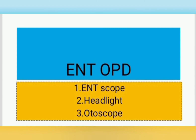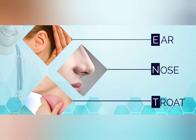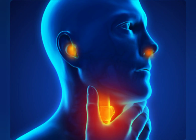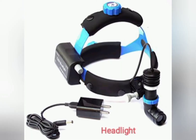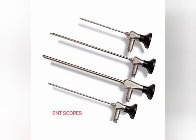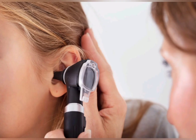Next is ENT OPD. ENT means ear, nose and throat. Patients who are suffering with problems related to ear, nose and throat visit this OPD. For better diagnosis, apart from general equipments, we need to have a headlight and ENT scope set. An otoscope is used to look into the ears so that doctors can screen the ear symptoms.